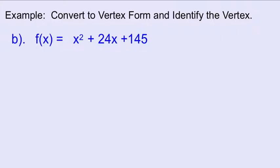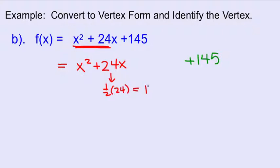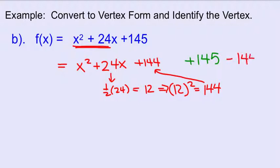Second example, convert it to vertex form, identify the vertex. So these are the two terms we're going to work with. We're going to leave a little space. And that plus 145 goes off to the end. I'm going to take half of 24 is 12. Then square it is 144. So we're going to add 144 here. That means we have to subtract 144.